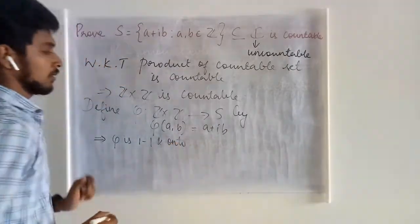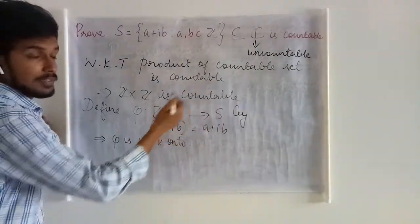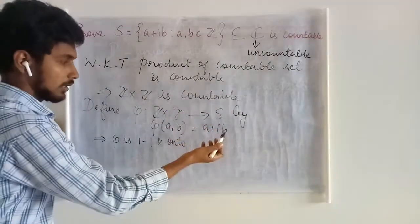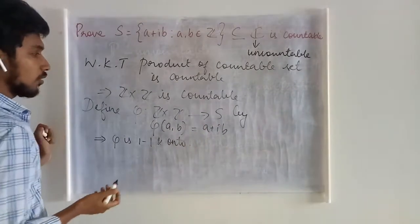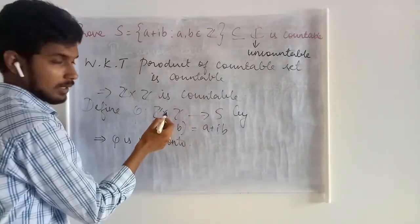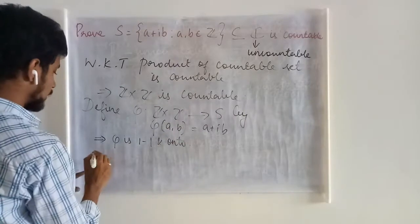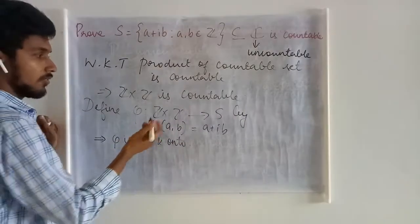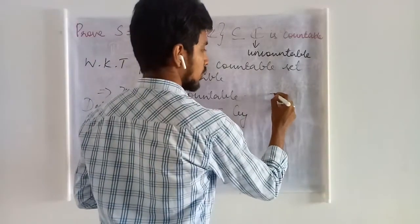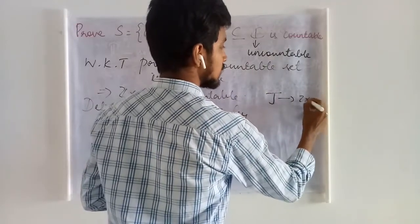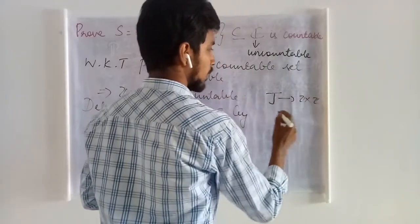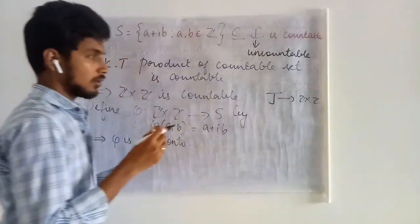That is, these two have same cardinality and these two are equivalent, right? And we know that this is countable. By this countability, what we have, we have some mapping from J to Z cross Z. We have a mapping, some mapping like this.